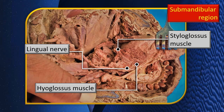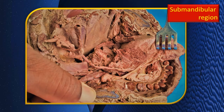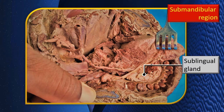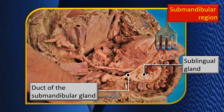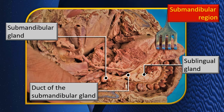The lingual nerve label is now identified in the dissection. In the anterior floor of the mouth below the tongue, the sublingual salivary gland with a few small lobes is visible; more posteriorly is the submandibular gland. The submandibular duct is also identified in this region.